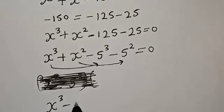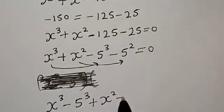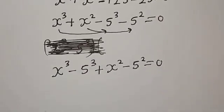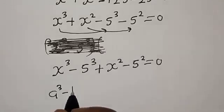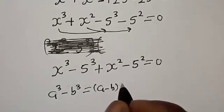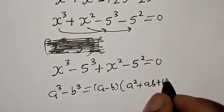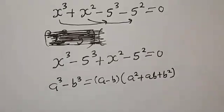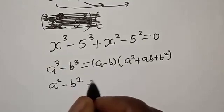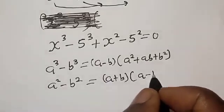We get s raised to power 3 minus 5 raised to power 3, plus s squared minus 5 squared, equal to 0. Remember the identity: a cubed minus b cubed equals a minus b times a squared plus ab plus b squared. Also, a squared minus b squared equals a plus b times a minus b.